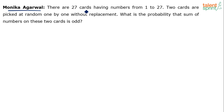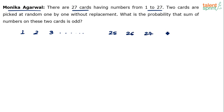We have 27 cards which are numbered from 1 to 27 — basically 27 numbers: 1, 2, 3, and so on up to 25, 26, 27. Two cards are picked at random one by one without replacement, meaning the number chosen will not be put back into the set. You choose one number, and then choose another number.